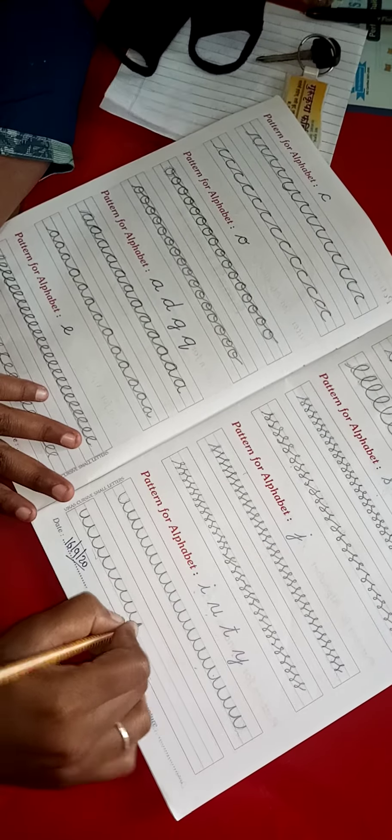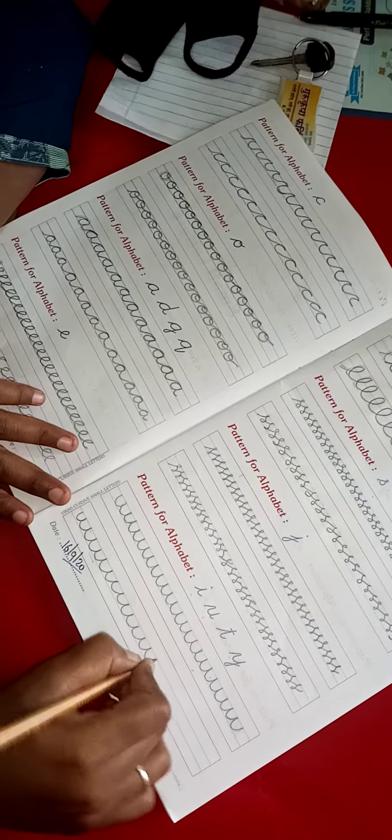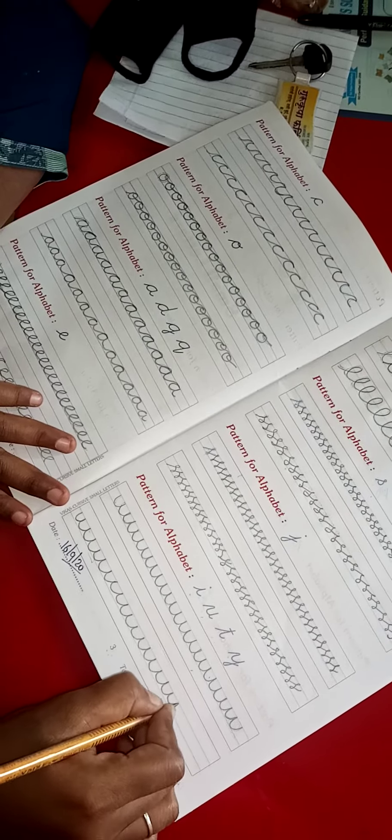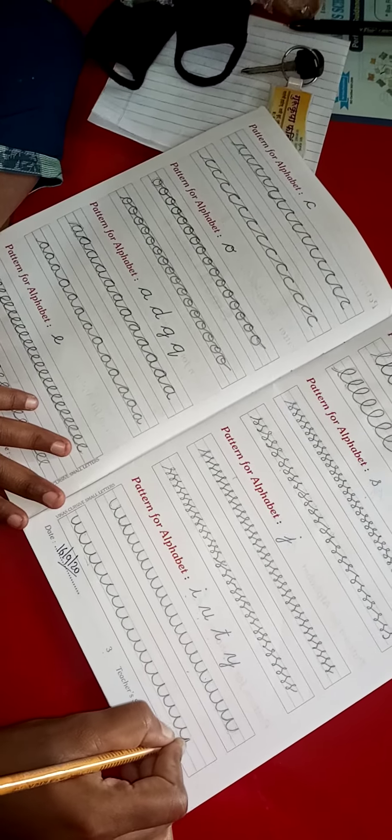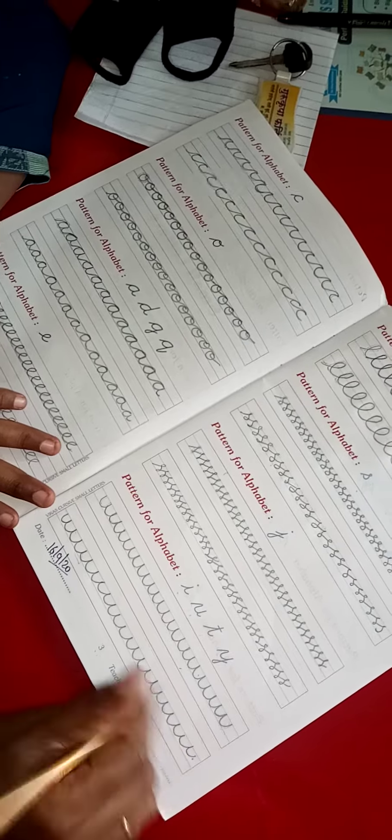Pattern of Alphabet L and B. First we are going to trace these patterns. Do not lift your pencil up. L letter and B letter. Now see how I am tracing the letters, I am not lifting the pencil up. See.